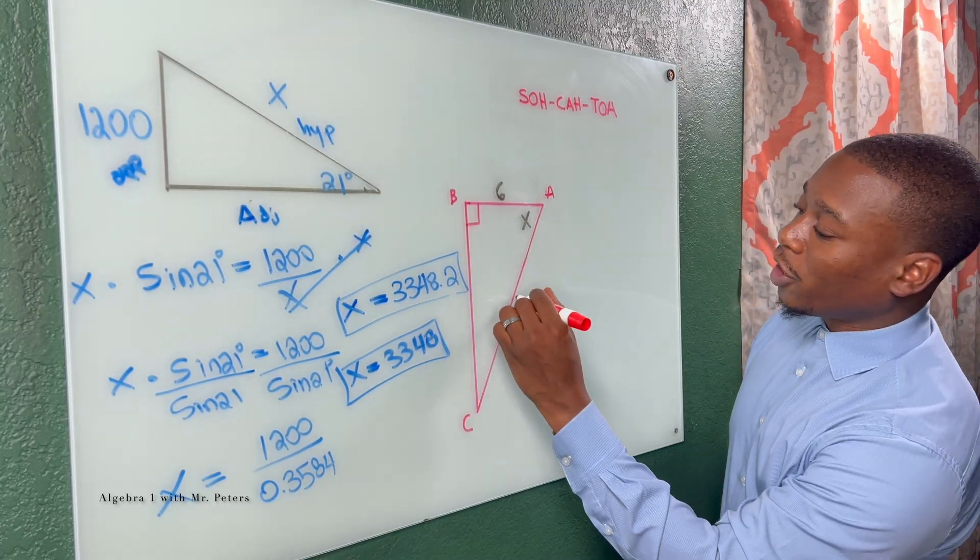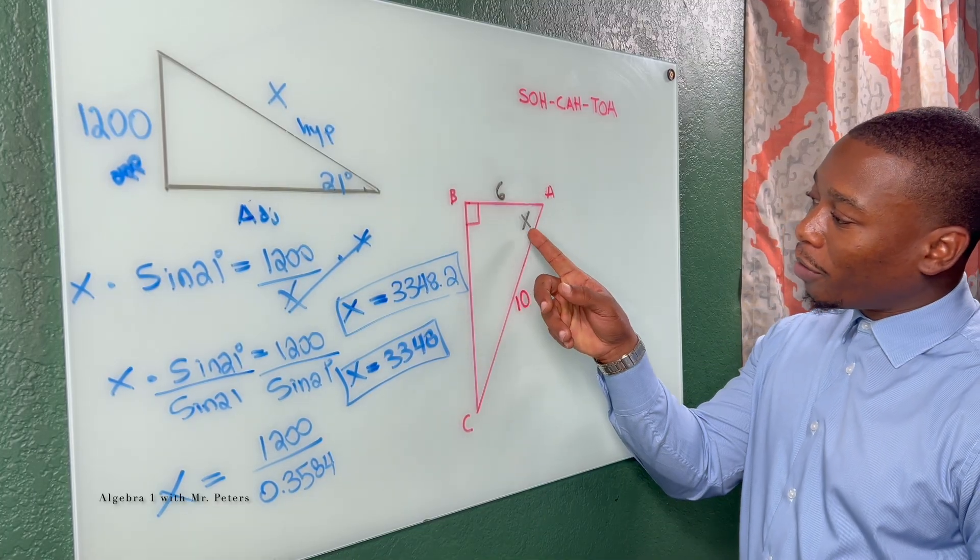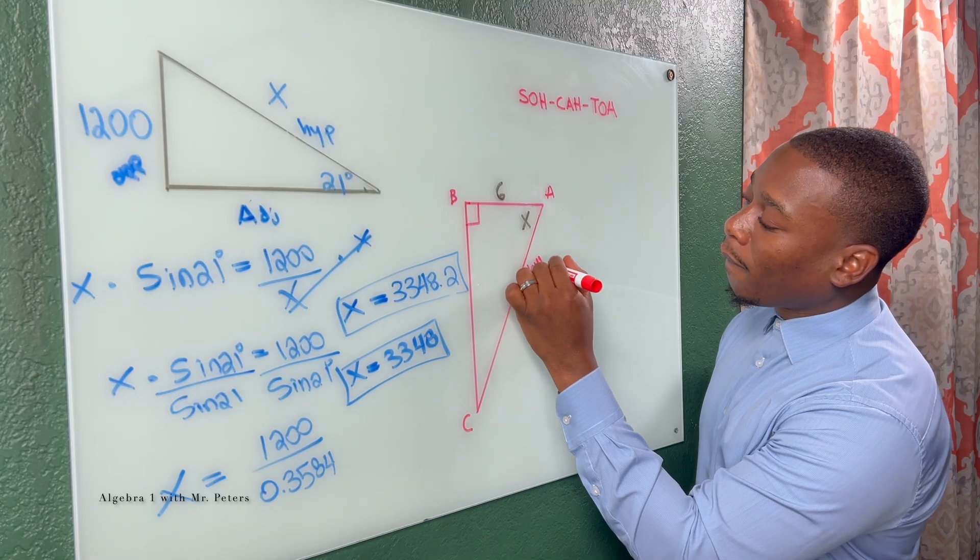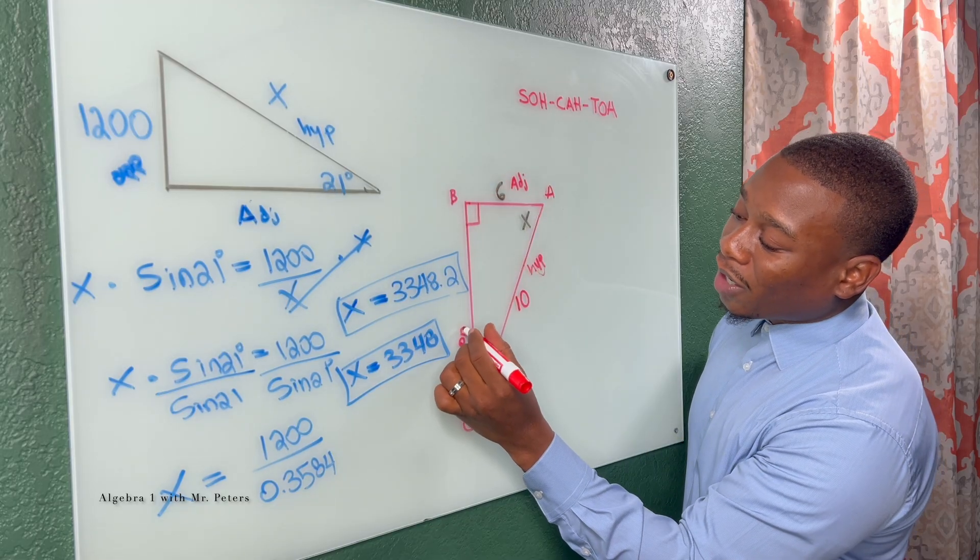And I think I'm missing something here. Hold on. Yeah, this side should be 10. All right. So now when we're here, we're talking about this angle. We know this is the hypotenuse. This side is adjacent and this side is opposite.